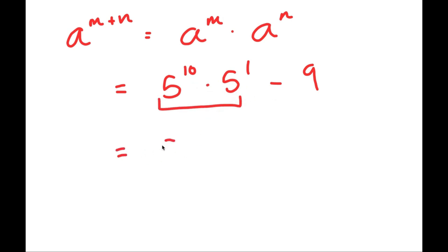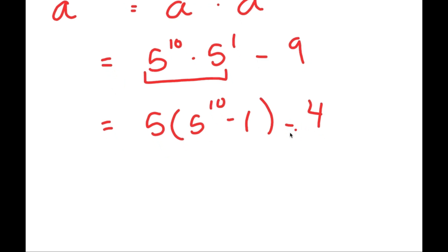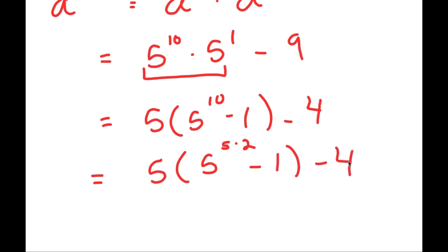So I get 5 times 5 to the power of 10, minus 1, minus 4. And this turns into 5 times 5 to the power of 10, which I'm rewriting as 5 to the power of 5 times 2, minus 1, minus 4.